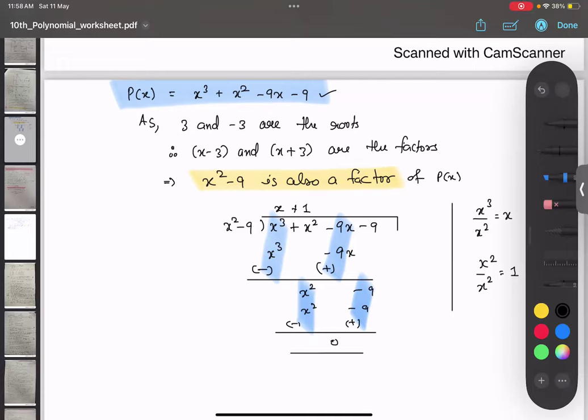Remember one thing: when we say this is a factor, the remainder should be 0. So we now take this number, x+1. This also became one of the factors. Therefore,